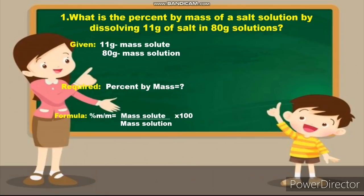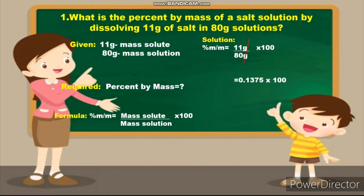Now, we will simply substitute all the given values. So, 11 grams, which is the mass solute, divided by 80 grams, which is the mass solution, times 100. The first thing that we will do is to cancel the unit in order for us to get the percentage. And if we divide 11 by 80, it will be 0.1375, and we still have 100. So, we should multiply 0.1375 by 100, and the result will be 13.75%.